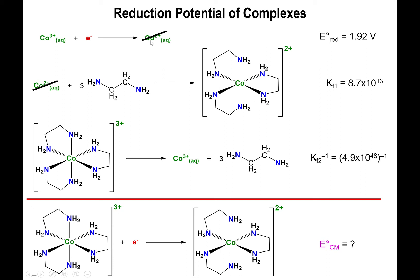We will cancel out the cobalt 2+ ions. We will cancel out the cobalt 3+ ions, which are naked, and we will, of course, cancel out the free ligands. And so we'll end up with simply cobalt 3+ complex plus electron yields cobalt 2+ complex.